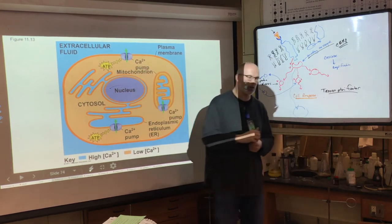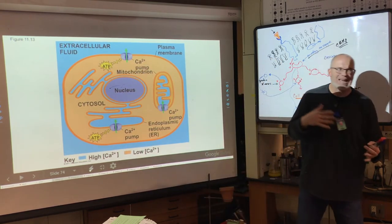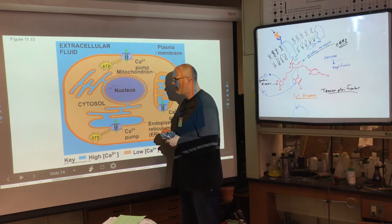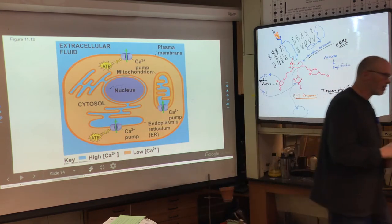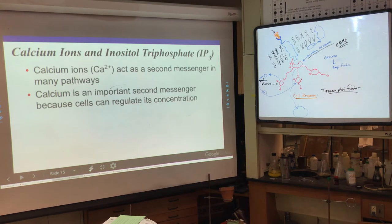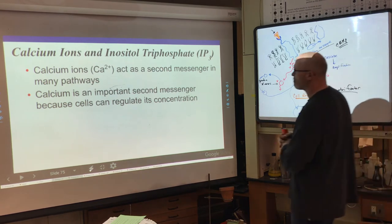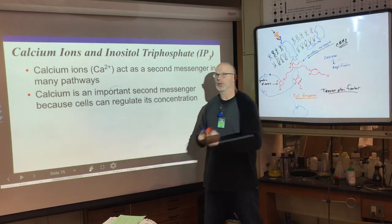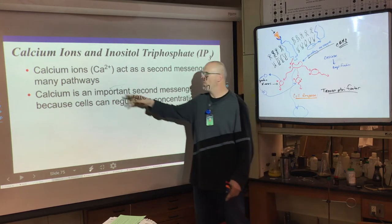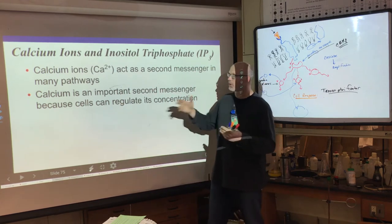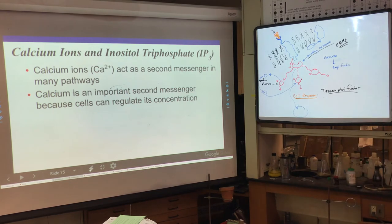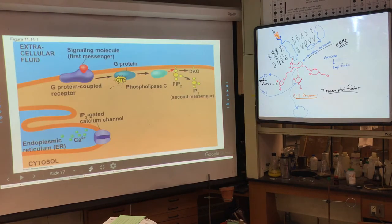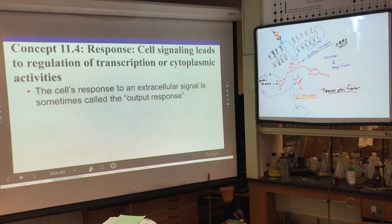Gated ion channels are another way we can send signals — that's with nerve cells, which we'll cover in the last unit. Calcium ions (Ca²⁺) are an important secondary messenger in many pathways, especially in skeletal muscle — the ability to contract muscles and move our bones depends on calcium ions as a secondary messenger. We'll discuss that more later.